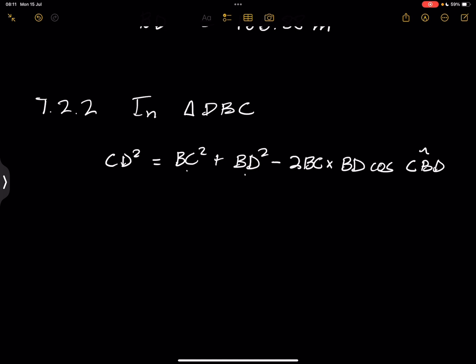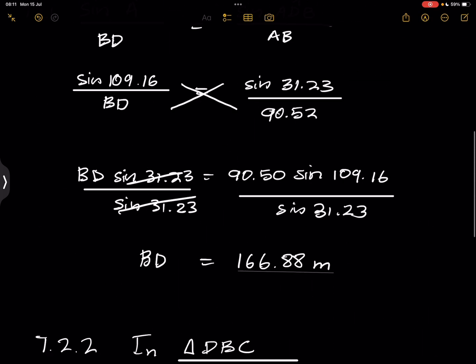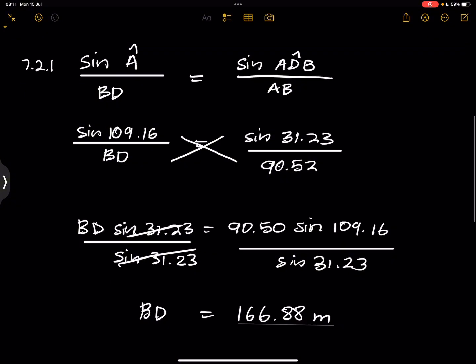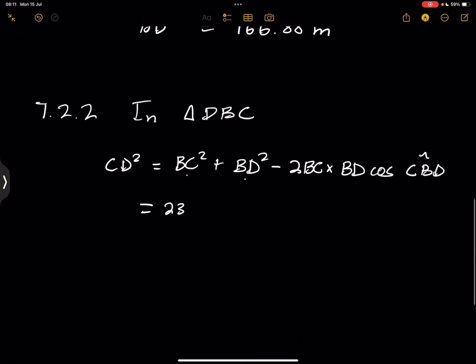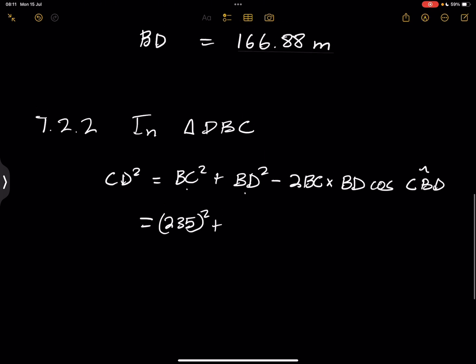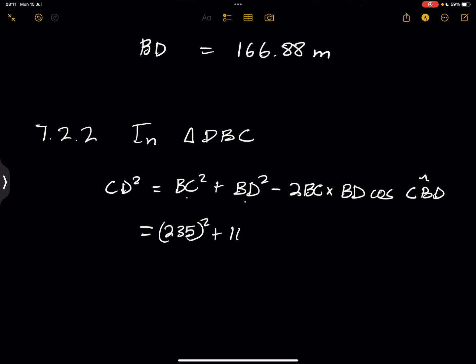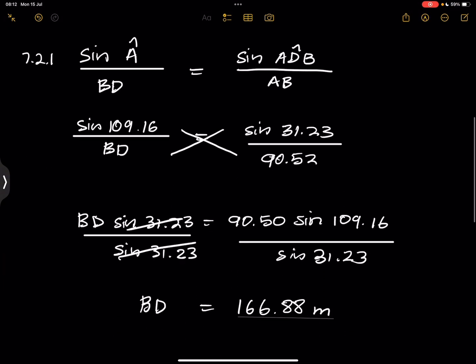That's how it works. So we're going to say, with BC, that's 235. So that's 235 squared plus BD, we just found BD to be 166.88 squared minus two times 235 times 166.88 times the cosine of 48.88, which is that included angle over there.